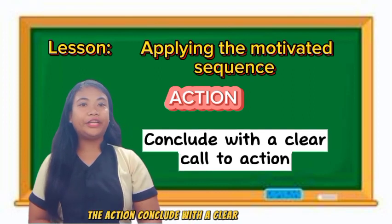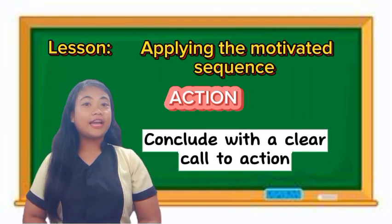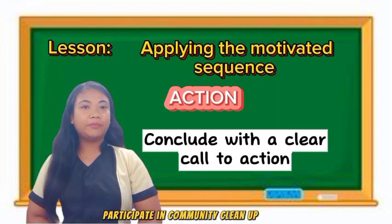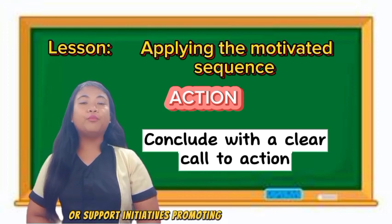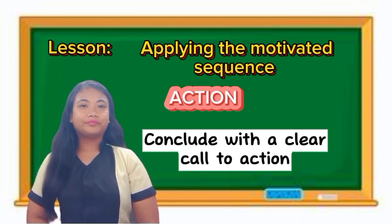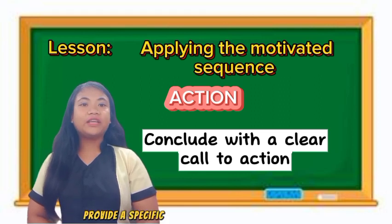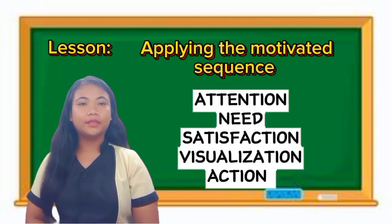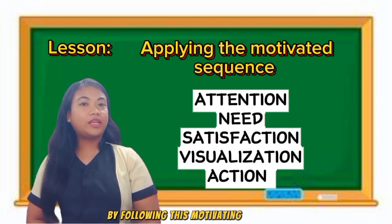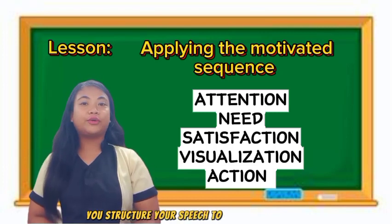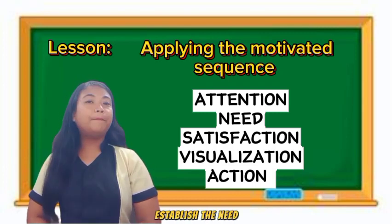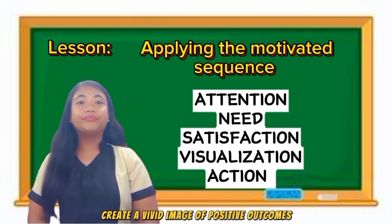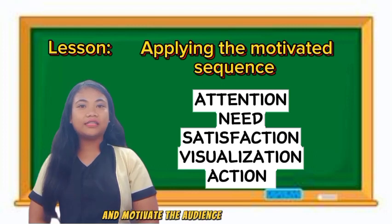In the action step, conclude with a clear call to action. Encourage the audience to adopt recycling habits, participate in community cleanup events, or support initiatives promoting sustainable practices. Provide specific steps, emphasizing their role in creating positive change. By following this motivated sequence, you structure your speech to capture attention, establish the need, propose a solution, create a vivid image of positive outcomes, and motivate the audience to take action.